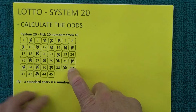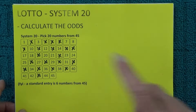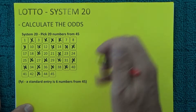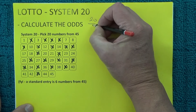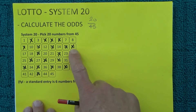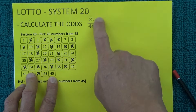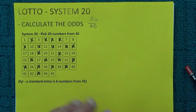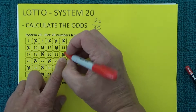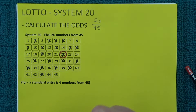I've got 20 random numbers picked out of the 45. As the first number is drawn, you've actually got 20 chances in 45 of matching it, because there's 20 numbers marked with a black X and there's 45 balls in the barrel. To show that one of those numbers has been matched, I'll randomly mark off number 22 as the first number drawn.